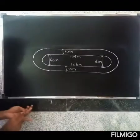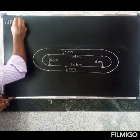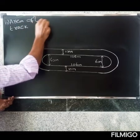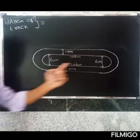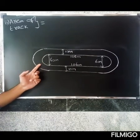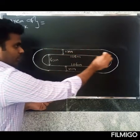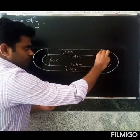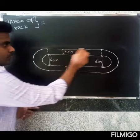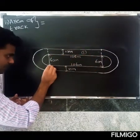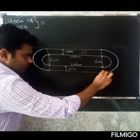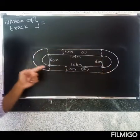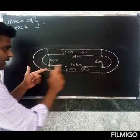Now for part two: find the area of the track. Area of track equals area of two rectangles plus the semicircular portions. Looking at the track, we can see two rectangular sections and two semicircular ring sections.